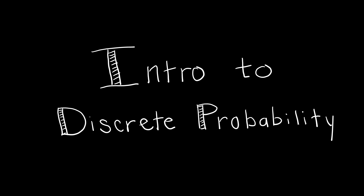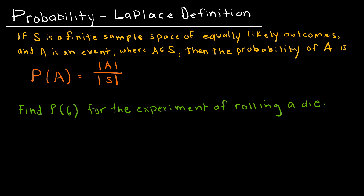This video will serve as an introduction to discrete probability. First, let's look at Laplace's definition. Laplace's definition is specific to events that are equally likely, that have equally likely outcomes.